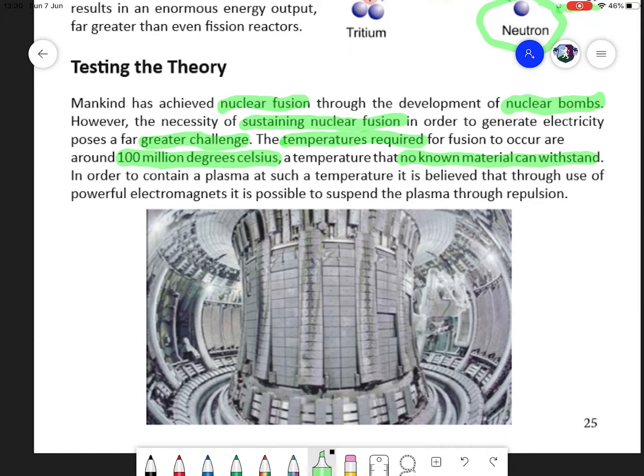No known material can hold something at that temperature, can remain in contact with it without being disintegrated. The plasma that we're using, because it has to be hotter than gas, has to separate the electrons from the nuclei to form a plasma.